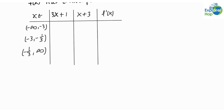Here is what the table looks like. From the critical points, we will check whether the derivative of f of x is positive or negative in the intervals from negative infinity to negative 3, negative 3 to negative 1 over 3, and from negative 1 over 3 to infinity.